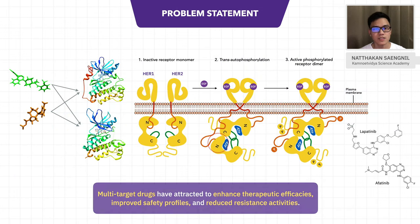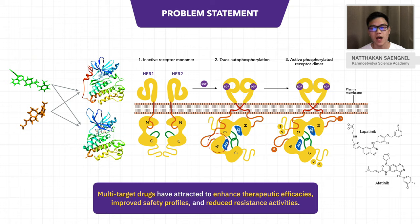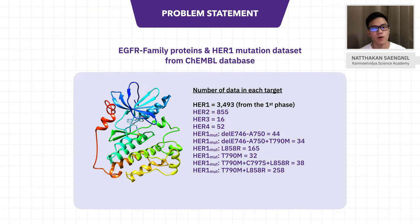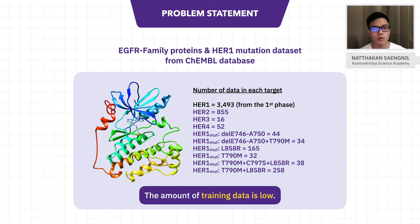Nowadays, multi-target drugs are used in varied treatments due to their better therapeutic efficacy than single-target drugs. For example, in cancer treatment, some multi-target drugs targeting EGFR family proteins can bind with both HER1 and HER2. Therefore, we created machine learning models for discovering new multi-target drugs against all EGFR family proteins. However, there is a low amount of experimental data, so we decided to use transfer learning and multi-target learning techniques to overcome these difficulties.